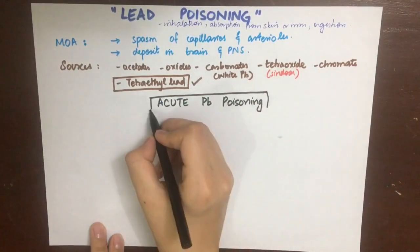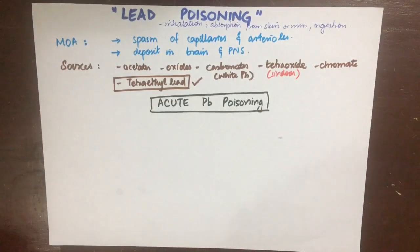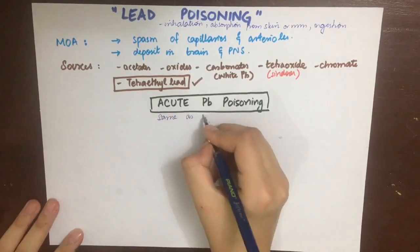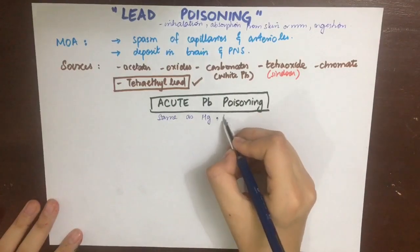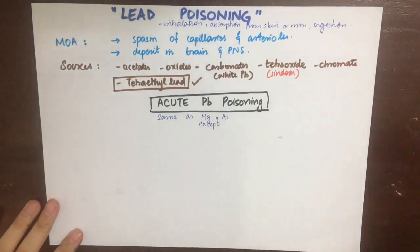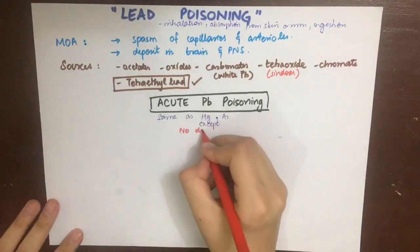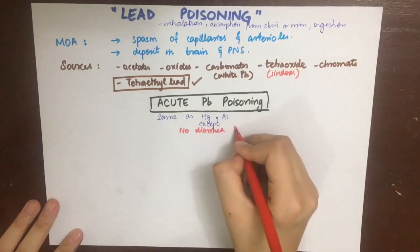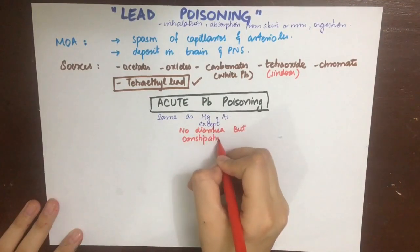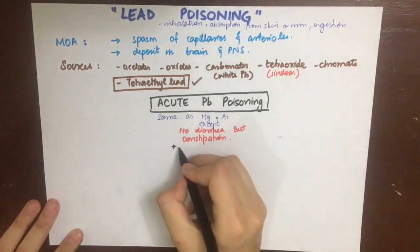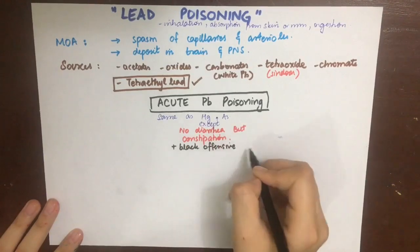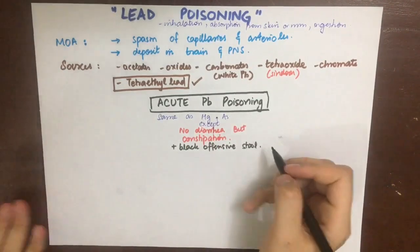Looking at acute lead poisoning, the symptoms will be the same as those in arsenic and mercury poisoning, except that diarrhea is replaced by constipation. The stool will be dark and black with an offensive smell because lead sulfide is formed.